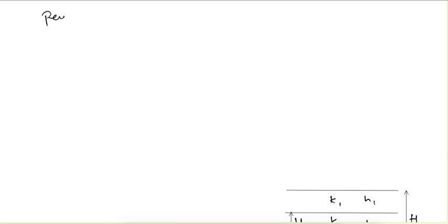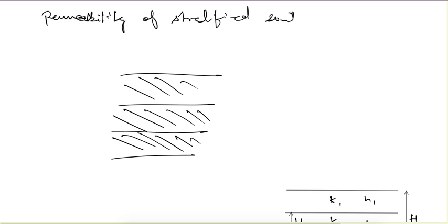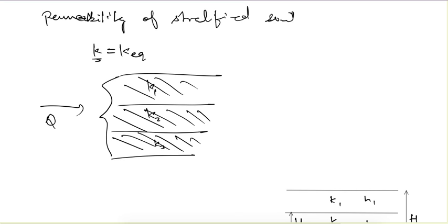The next part is the permeability of stratified soil. Soil formation occurs over thousands of years, so soil forms in layers and the properties of these layers are not the same. Because of this, their coefficient of permeability is also not the same. To find the discharge through stratified soil, we define an average value called k-equivalent.